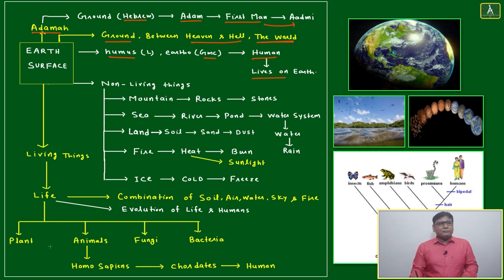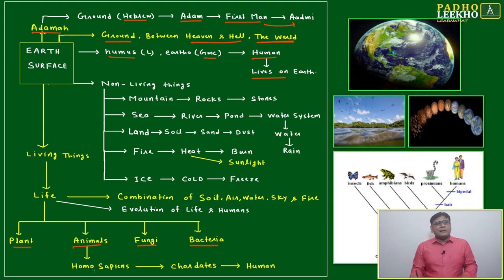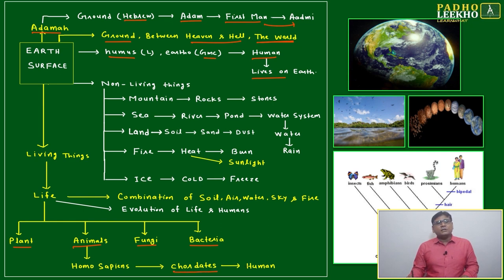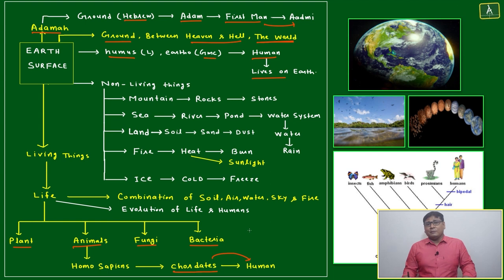Life is divided into living things in multiple ways: plants, animals, bacteria, and fungi. From animals, finally will come one category — homo sapiens — and one type of homo sapiens is caudates, which has finally become the human being.